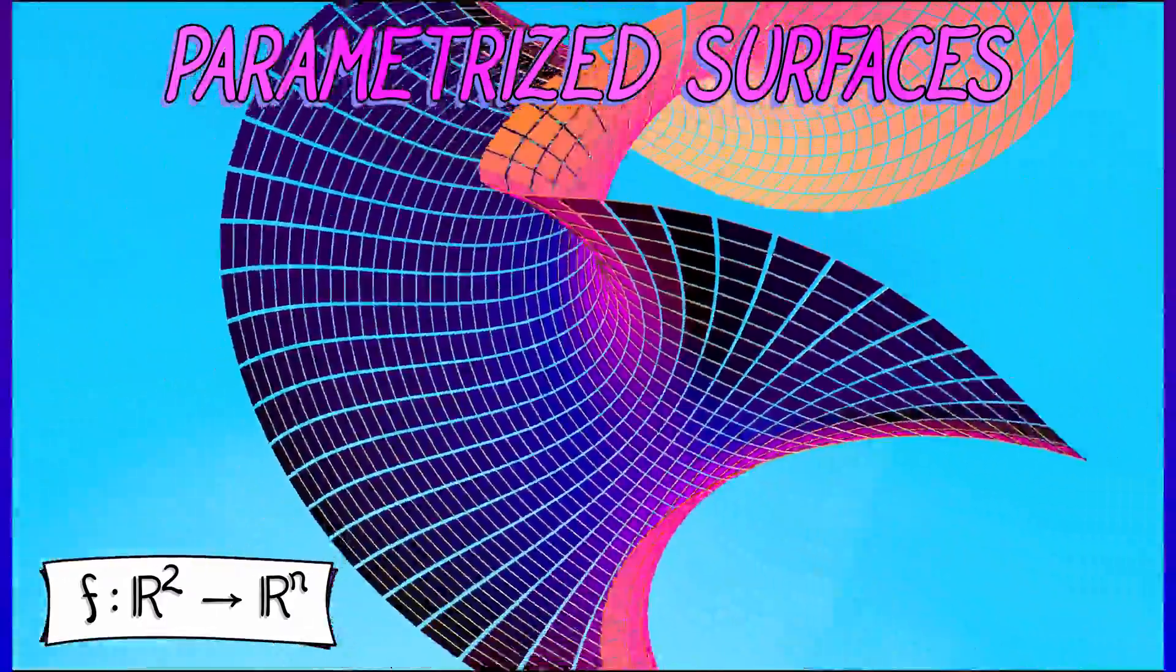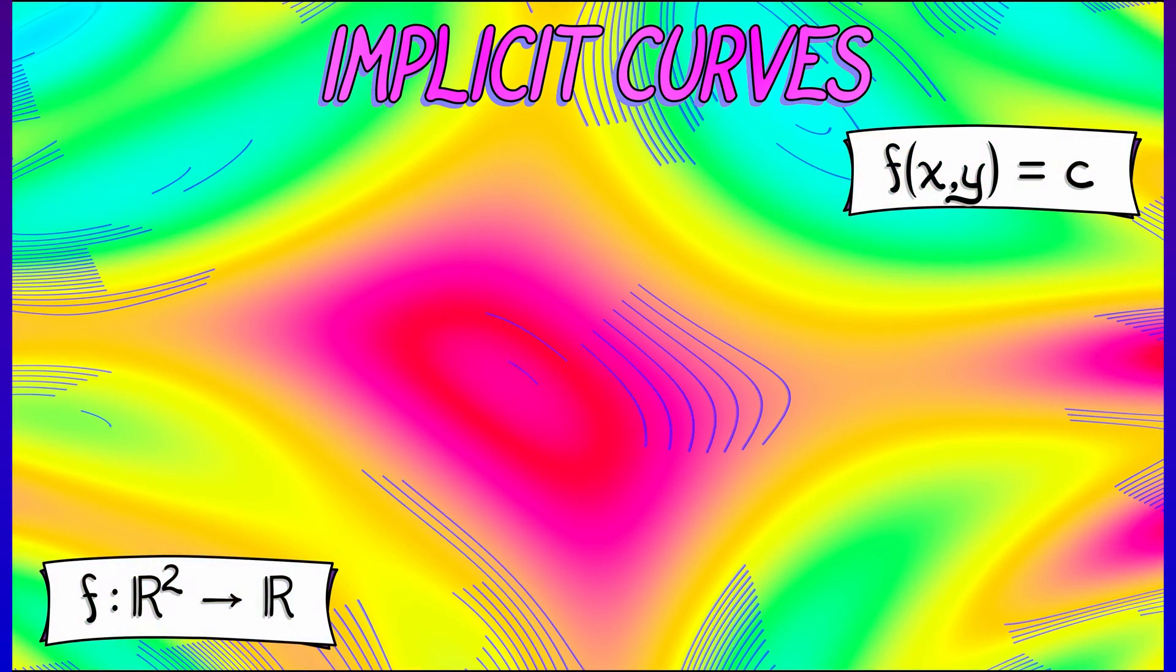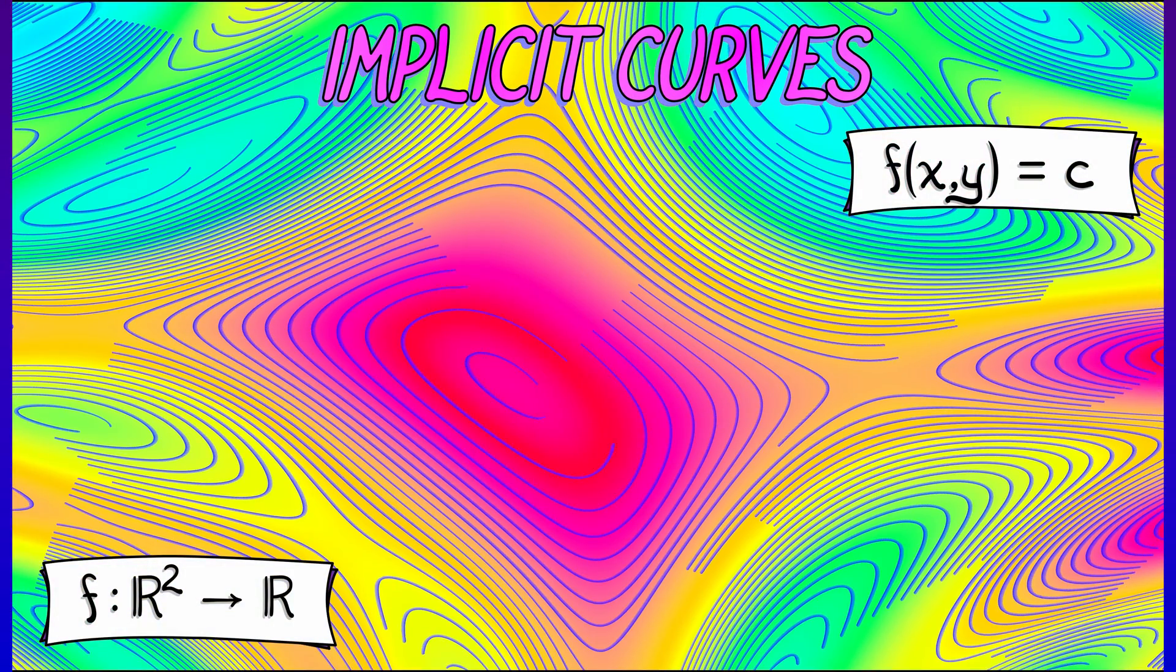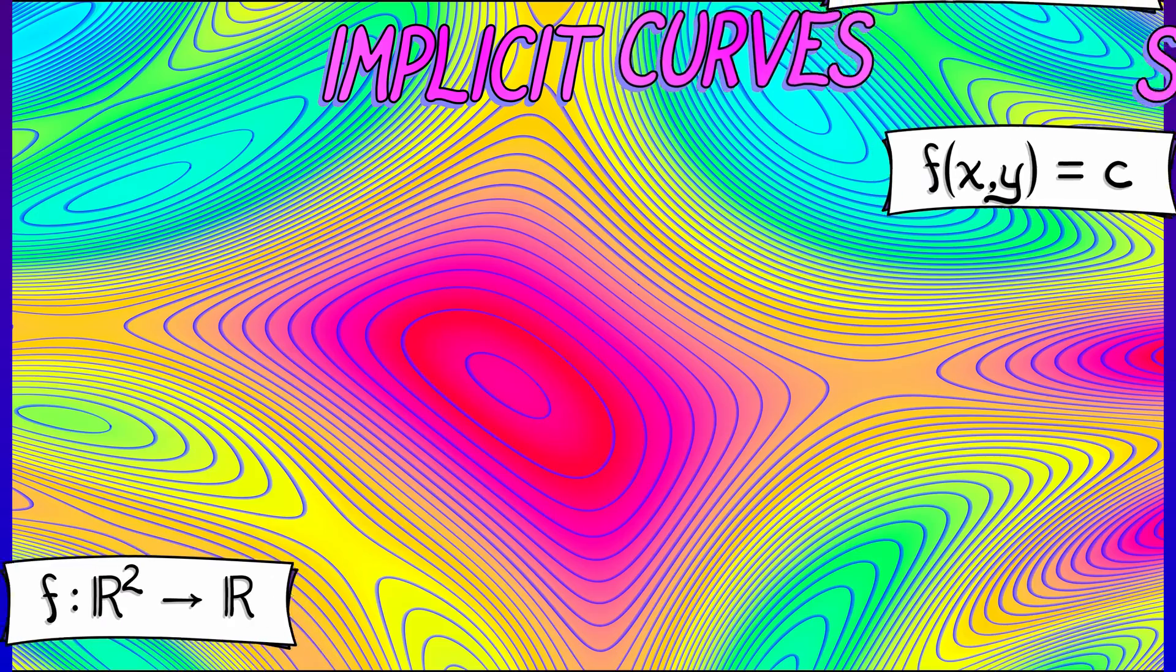But that's not all. We've also looked at implicit curves, where we set some function of two inputs equal to a constant. And if you vary that constant, then it fills up the plane with these implicitly defined curves.